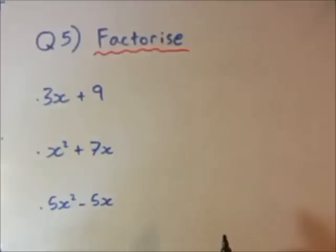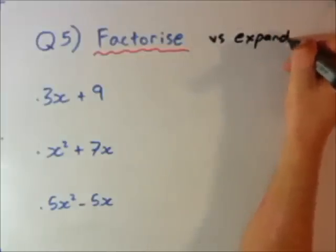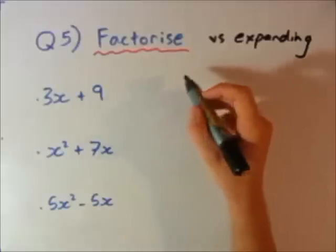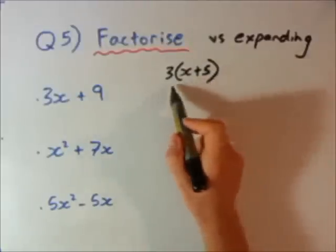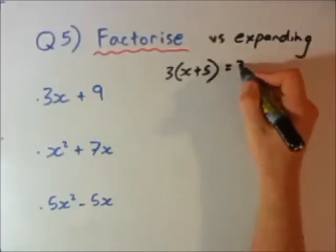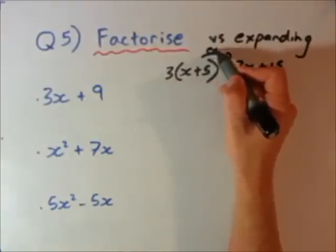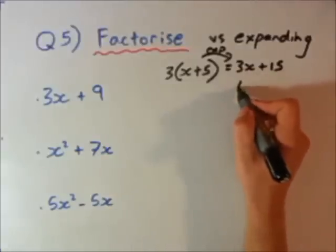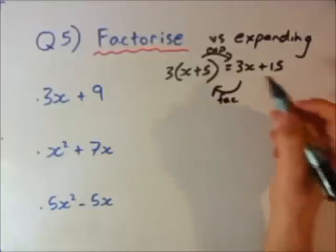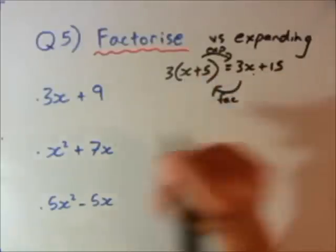Question 5, we're now looking at factorising. And that is kind of like the opposite to expanding, which we did in question 3 and also question 4. So you've got factorising versus expanding. I'll use a simple example. What if you had 3 and then x plus 5? Currently this is in bracket form. If I want to expand it, I'll go 3x plus 15. Now if I only had 3x plus 15 and I want to go the other way, factorising, I need to put it back in bracket form. That's what factorising is all about. I'll show you how to do that with these 3 questions.